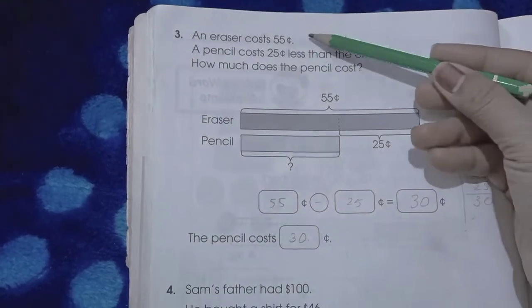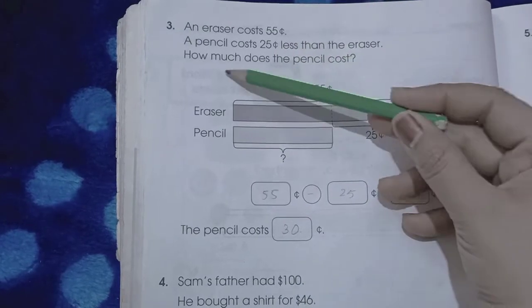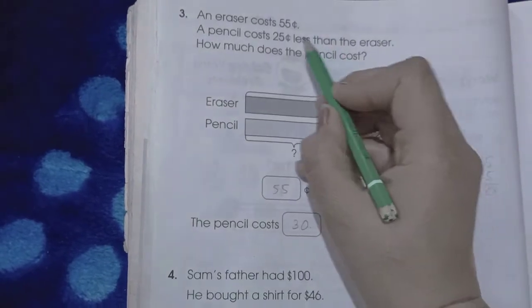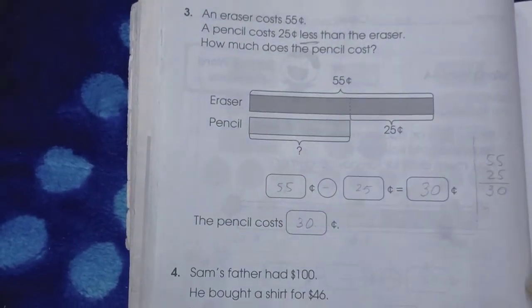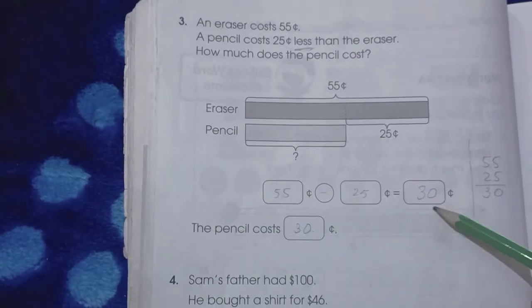Page number 34. An eraser costs 55 cents. A pencil costs 25 cents less than the eraser. How much does the pencil cost? Now, less means we have to subtract. We simply subtract 55 minus 25. The answer is 30. The pencil costs 30 cents.